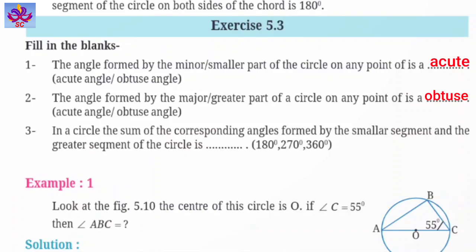Third is given, in a circle, the sum of the corresponding angles formed by the smaller segment and the greater segment of the circle is blank. किसी circle में, smaller segment और greater segment के द्वारा बनाया गया जो corresponding angles है, उसका sum कितना होता है - 180 degree, 270 degree, और 360 degree. तो यह होता है 180 degree, तो यहाँ पर हम fill करेंगे 180 degree.